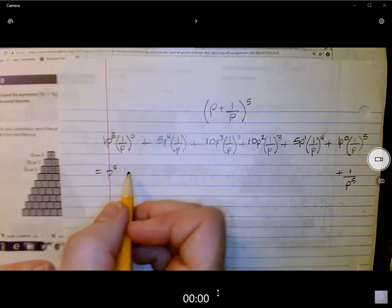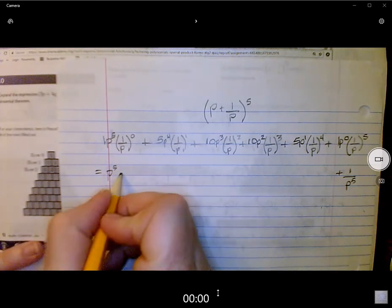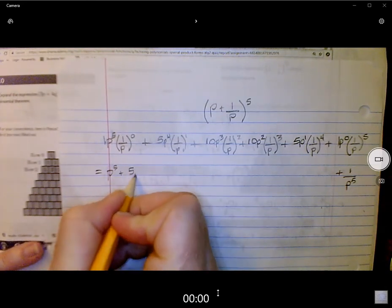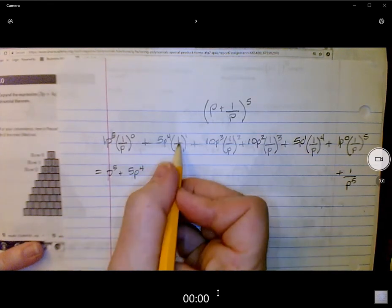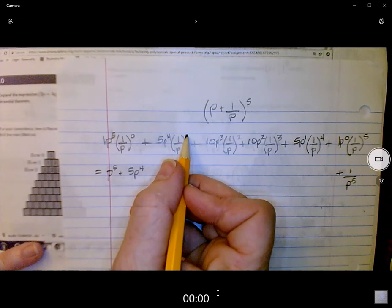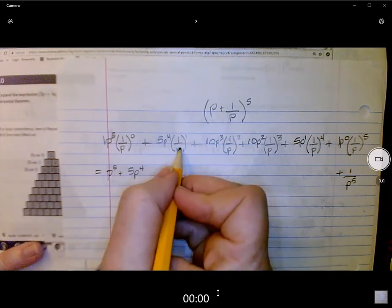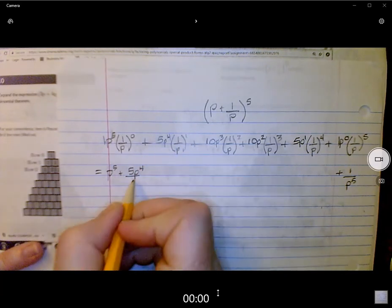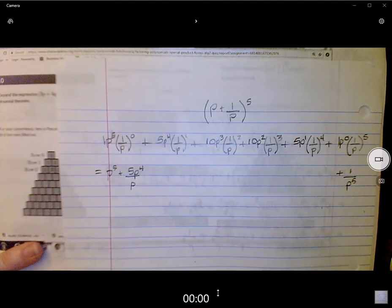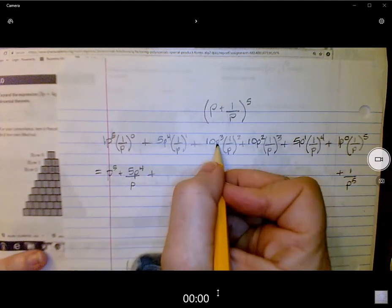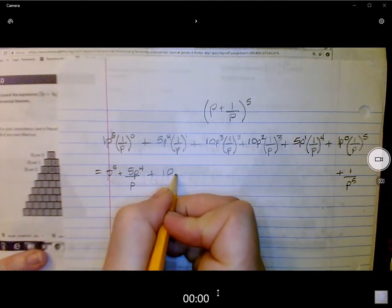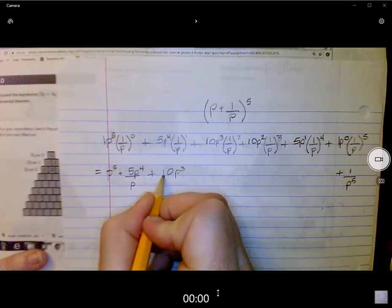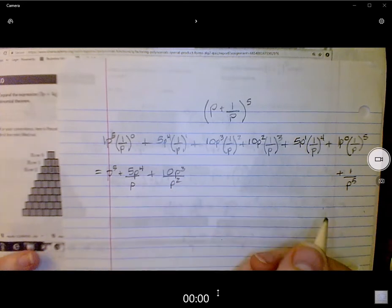All right. Let's work on these middle terms. We have a 5 P to the fourth, and this is just going to be 1 over P, because it's to the first. So I'm going to just move this right under that term. All right. This is 10 P to the third times 1 over P squared, so I'm going to do the same thing.